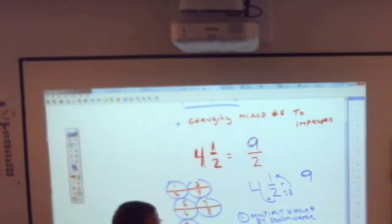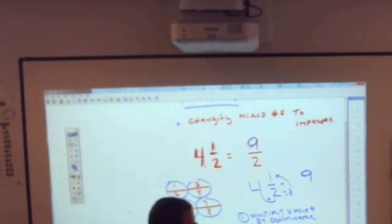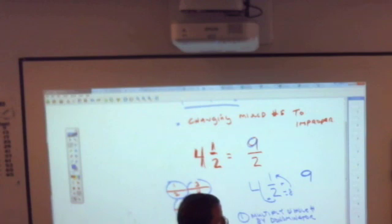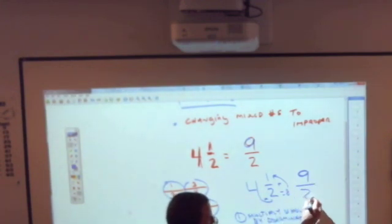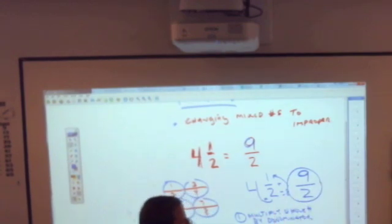And then, step number 3 is you keep your same denominator. Keep the same denominator, which means my bottom number was 2, so it stays 2. 4 and 1 half is the same exact thing as 9 halves.